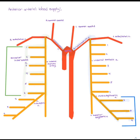Arterial blood supply for intercostal spaces 1 through 6 originates at the aorta, travels to the brachiocephalic artery, then to the subclavian artery, and down the internal thoracic artery to the anterior intercostal arteries.